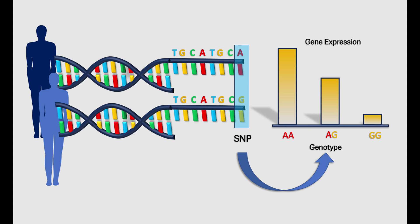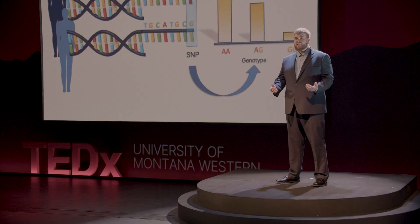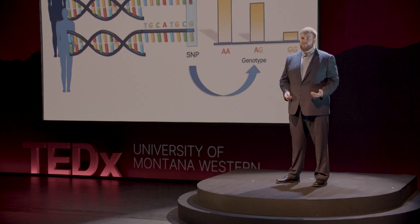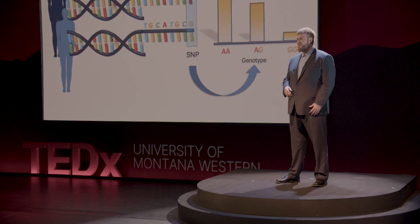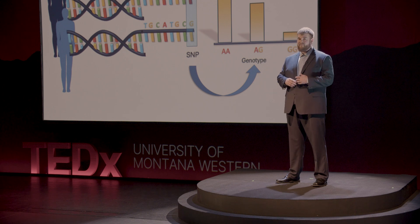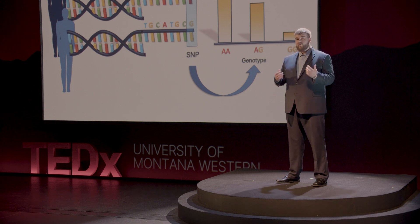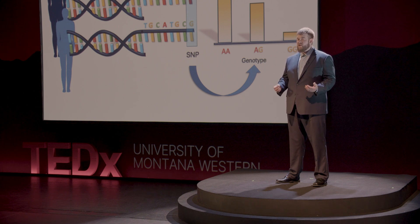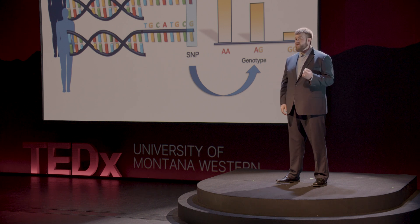We've learned so far that some SNPs in our DNA are able to act like a remote control's volume button, dialing up or dialing down the expression of various genes in the genome. But this process can be a bit like falling dominoes, where one SNP affects some gene, which in turn affects some other gene, and so on. The process of trying to map out which SNPs and genes go together is called causal network inference.